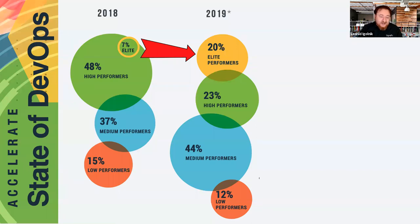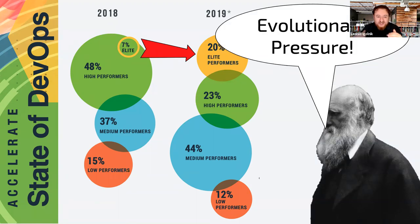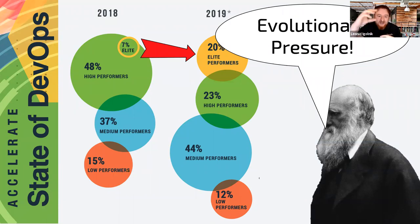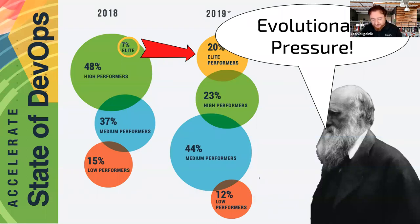You see that evolutionary pressure in the DevOps report as well. The strong are getting stronger and separating themselves from medium performers. The medium performance category has grown, the elite category has grown, and the part in the middle is continuing to shrink. That's a perfect example of evolutionary pressure — companies that figure it out will survive, and those that don't will fall by the way of progress. In the current economic environment, that evolutionary pressure will only increase.